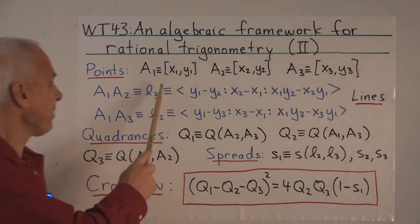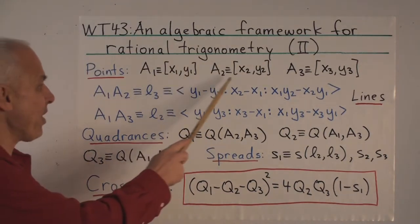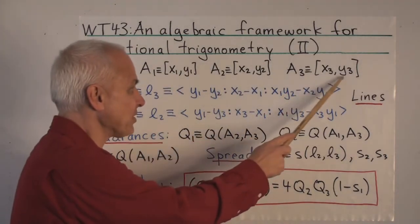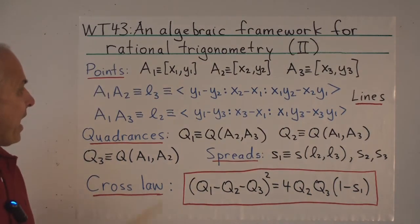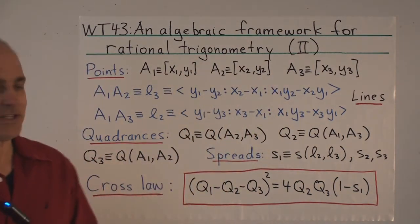So our setup is that we have three points, A1, A2, A3, and they have coordinates x1, y1, x2, y2, and x3, y3. And the only thing we'll assume is that these three points are distinct.